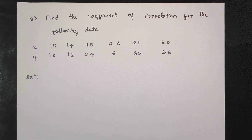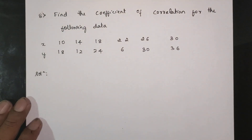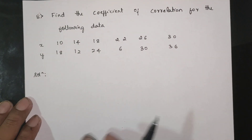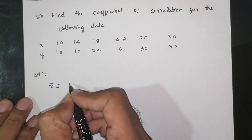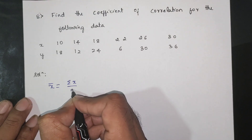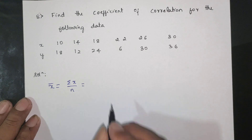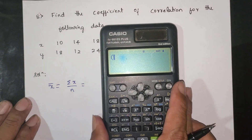This is a question. Find the coefficient of correlation for the following data x and y. The x values are 10, 14, 18. First, calculate x-bar, which equals the summation of x divided by n.